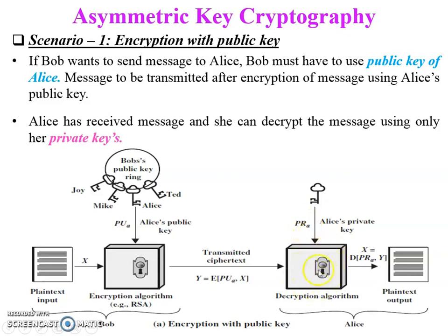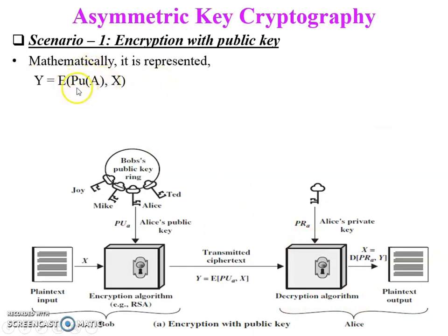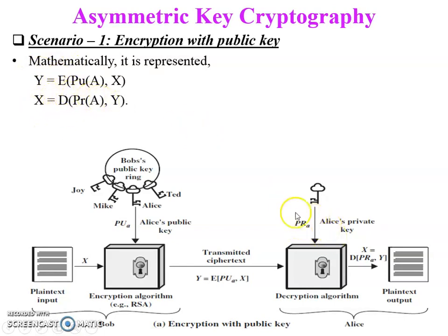The public key is distributed to all users, while the private key is known only to a particular user. If there are three users in the network, all users know each other's public keys, but each user's private key is known only to that user. There are two different encryption scenarios: first, public key used for encryption and private key for decryption; second, private key used for encryption and public key for decryption.